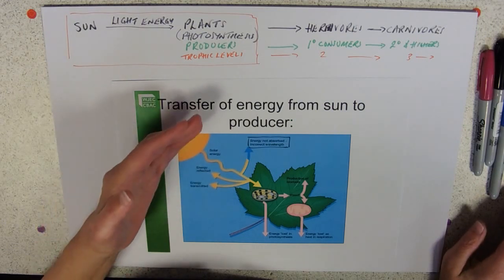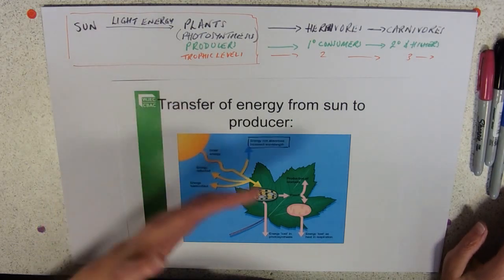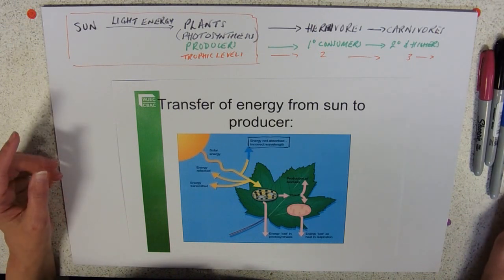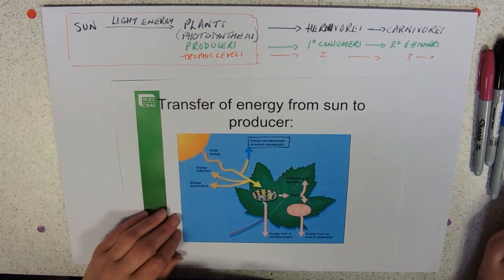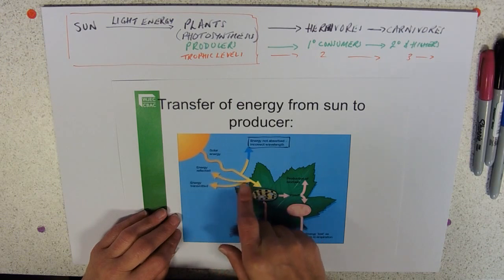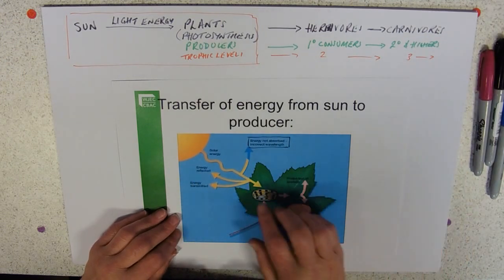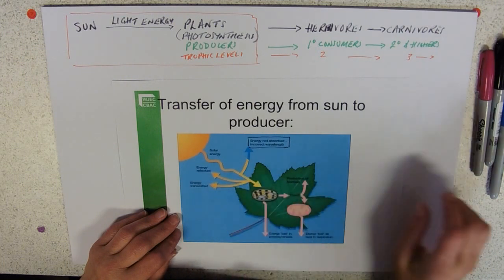So that is solar energy coming in that is not available to be used in photosynthesis. We've also got leaves with fairly shiny surfaces because of the waxy cuticle, and some of them just bounce the whole thing back off again. And we've got some energy that's transmitted.